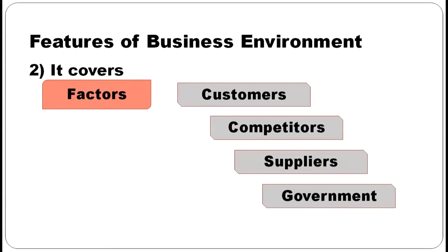Similarly, suppliers — if they are supplying raw materials of a new type, for example, plastic came as a new product supplied by suppliers, then we started using plastic utensils, plastic buckets, plastic sheets, etc. So these factors will affect the business environment. Then government policies — I will come to how government policies are affecting later in this session.